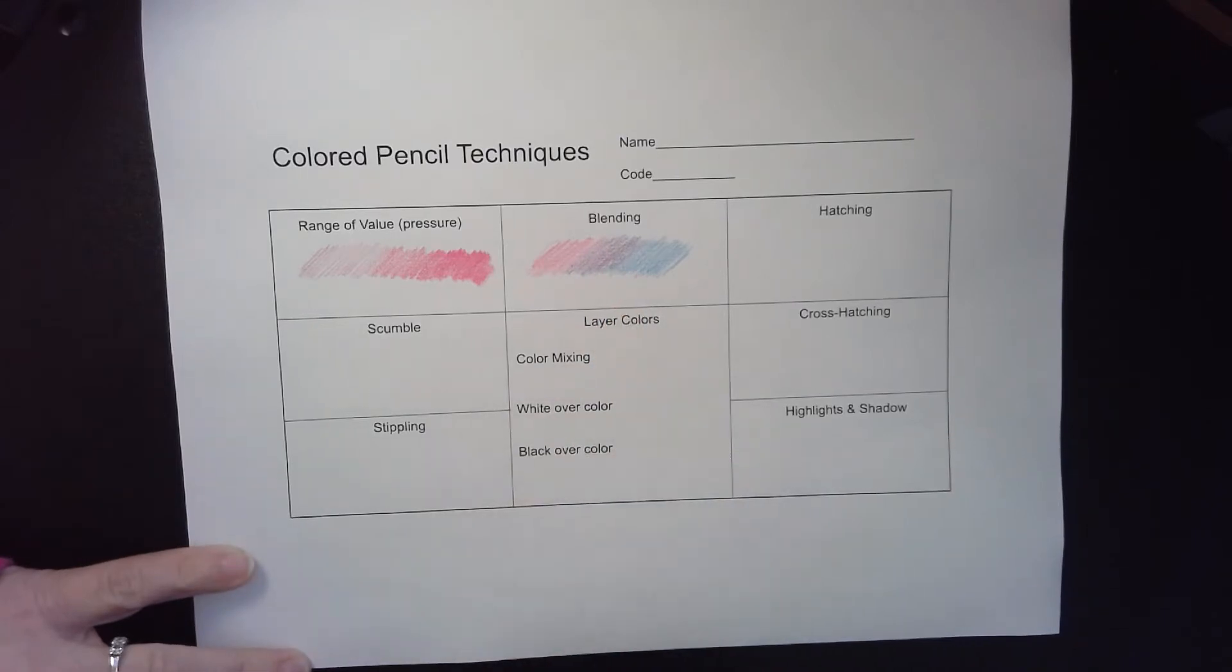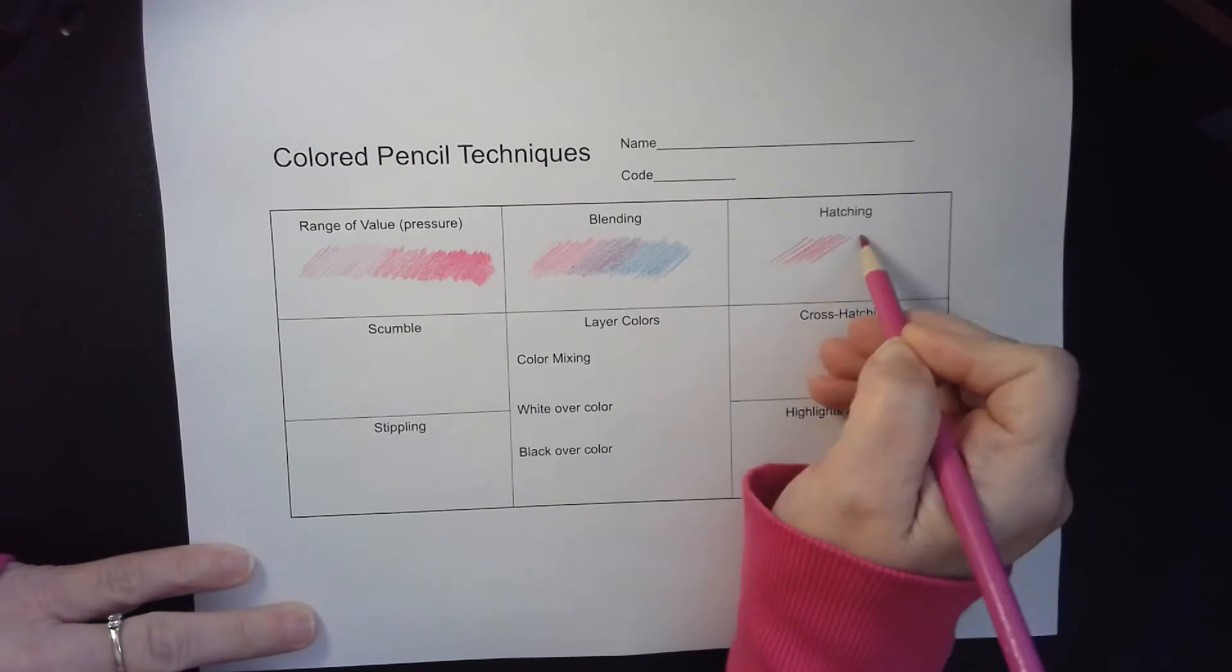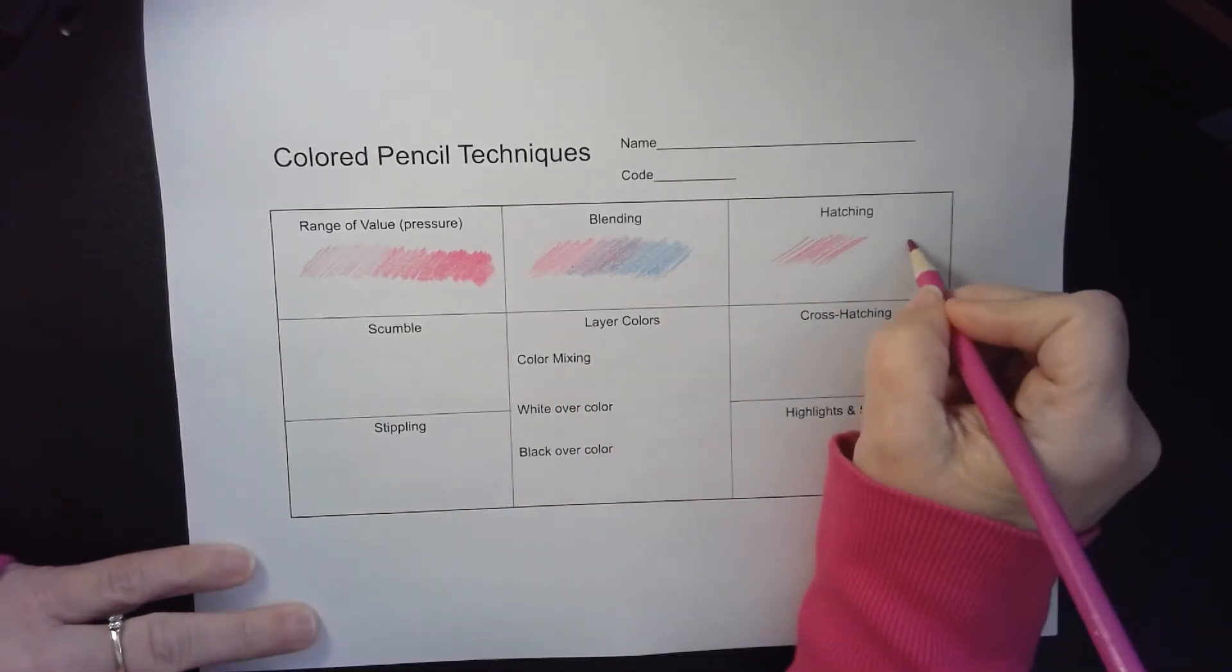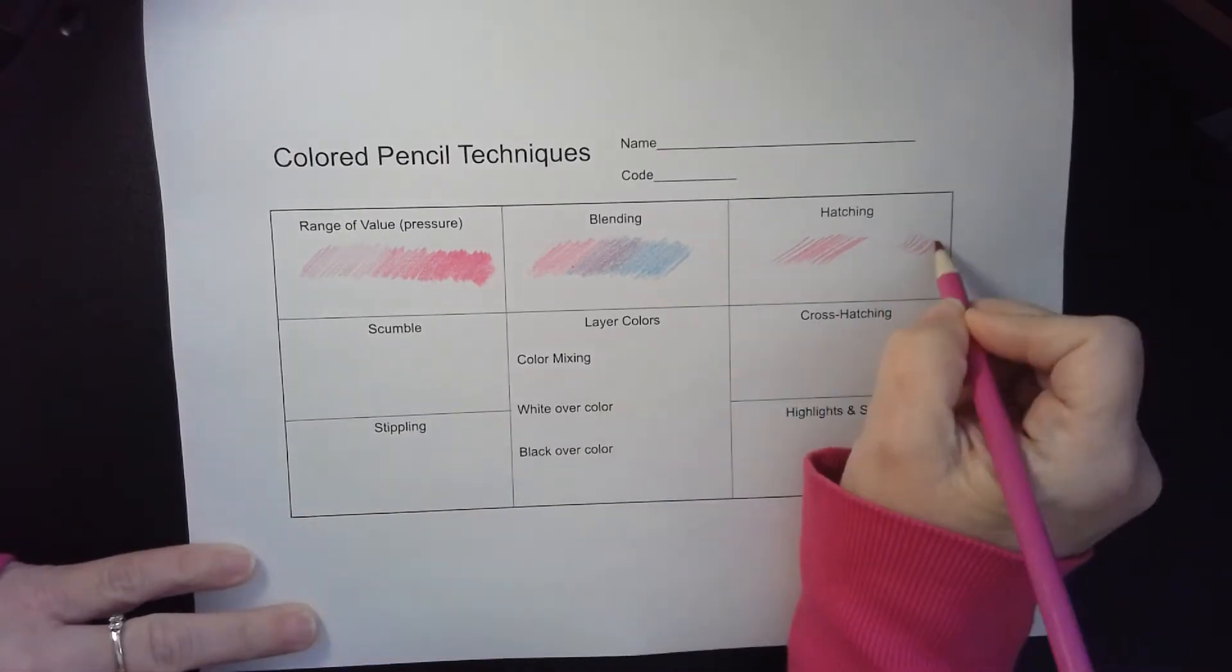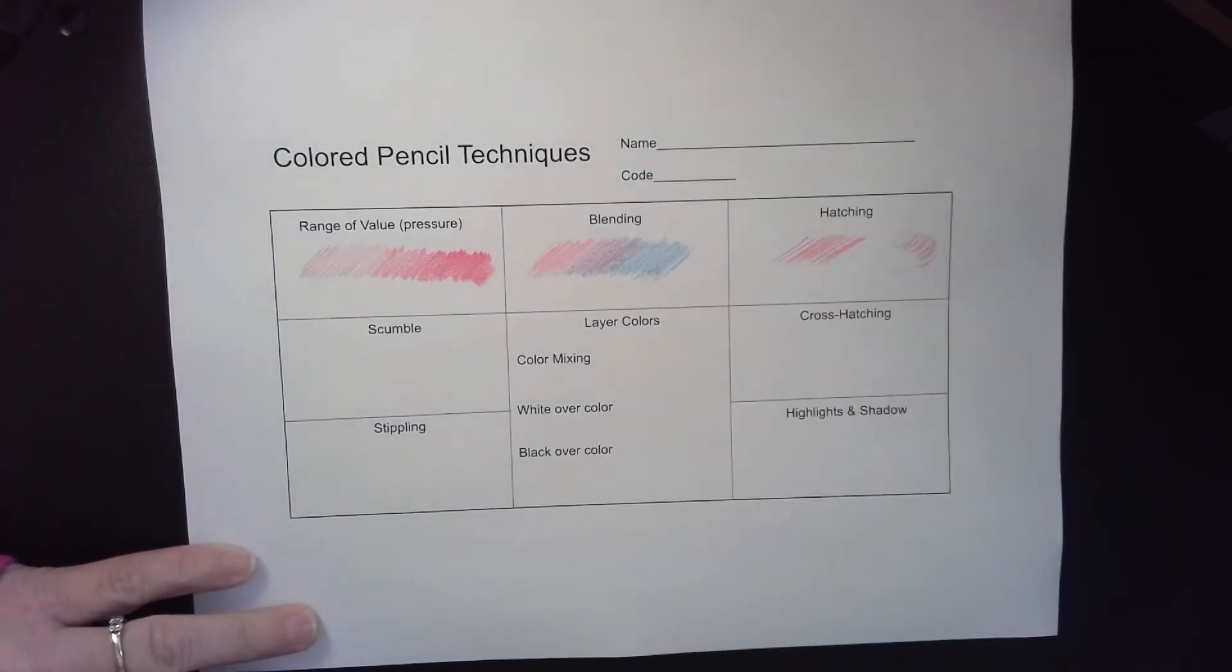Hatching is when you start with some diagonal lines and they're pretty close together. You could also do hatching in a curving motion if you were trying to show something that was curved. So if I put an oval or a circle here and I want to show those lines going around, I would make those curved.